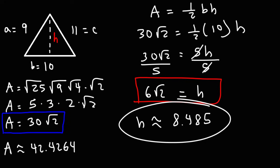So that's how you can calculate the height of a triangle given the three sides of the triangle. It's by calculating the area of the triangle using Heron's formula first, and then using the area of the triangle to calculate the height. So that's it for this video. Thanks for watching.